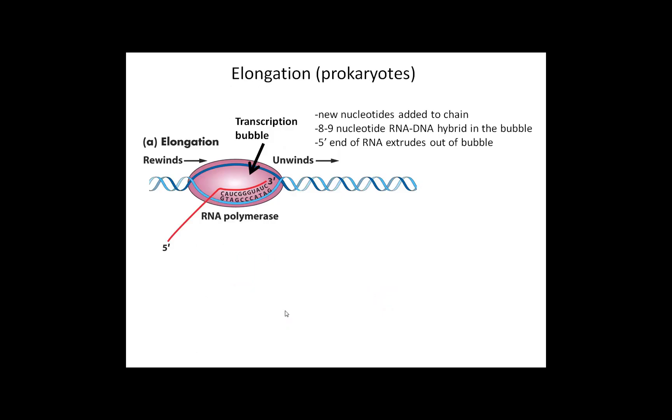That core enzyme now is shown as this purple oval. During elongation, the RNA will start to be formed and you have these new ribonucleotides coming in, complementary base pairing with the template strand of the DNA.